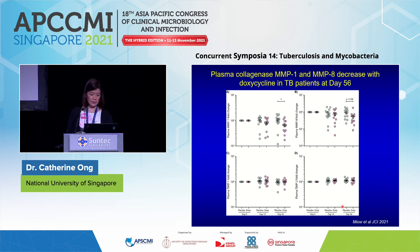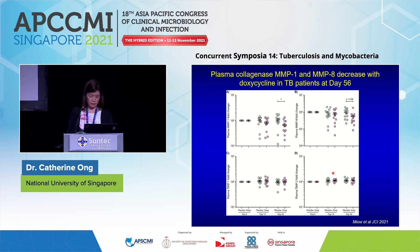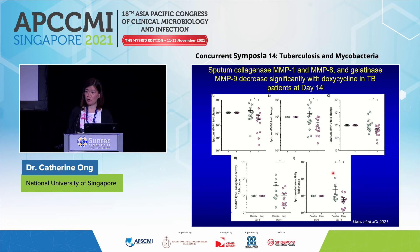Within the systemic compartment, plasma MMP1 started to decrease at day 14 and met statistical significance at day 56, suggesting a post-antibiotic effect. MMP8, likely neutrophil-derived, nearly met statistical significance. TIMPs did not change with doxycycline. The effects within the respiratory compartment were more pronounced: there was statistically significant depression of MMP1, MMP8, and MMP9 in sputum samples, which translated to increased inhibition of type 1 collagenase activity and sputum elastase.